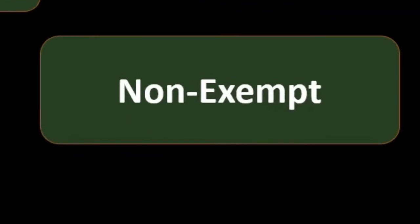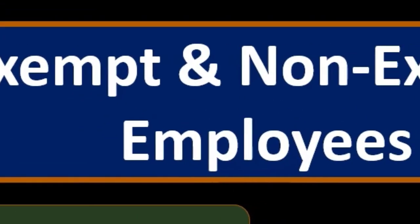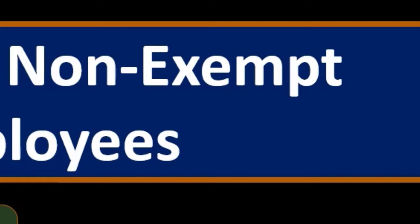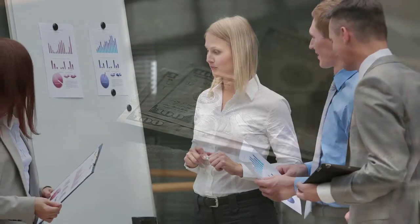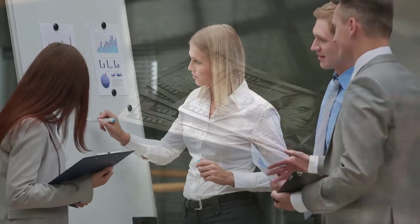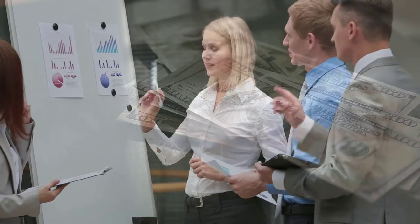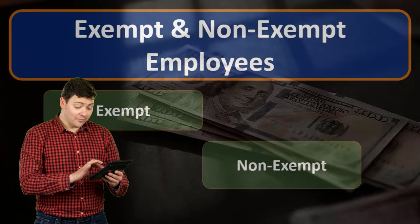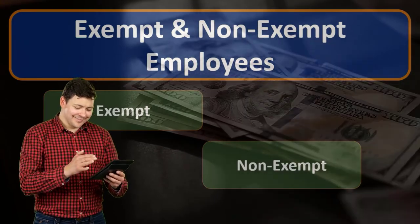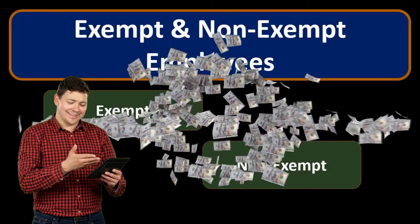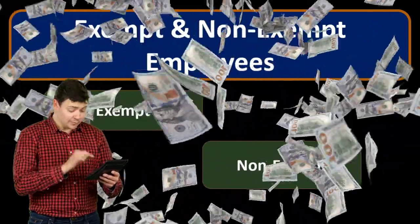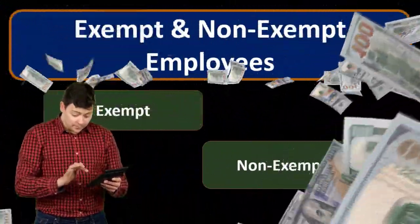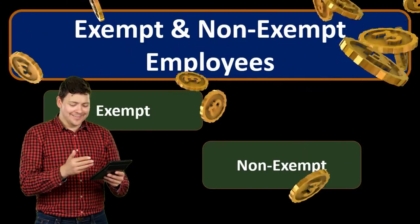The overtime calculation is there to make sure advantage isn't taken of workers who don't have many other options and would have less choice in being required to work long hours without added compensation. Exempt workers would typically be salaried employees — higher-level employees, managers, and highly skilled workers — whereas non-exempt workers are typically hourly based, though that's not always the necessary distinction.